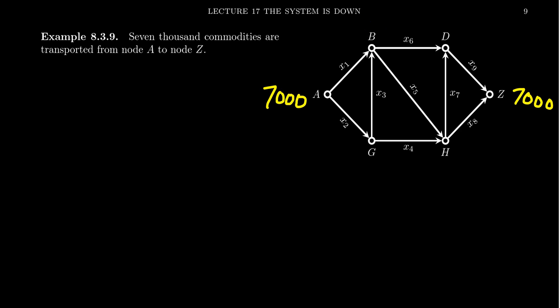And so in the presence of this conservation law, we then get a system of linear equations. And we're going to get an equation for each of the nodes in this network. So the first one, we're always going to write the input on the left side and the output on the right side. So if you look at the vertex A, you have 7,000 coming in. That's where they start.